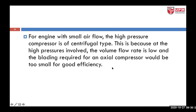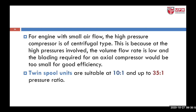For engines with small airflow, you have a small air intake. The high pressure compressor is of centrifugal type, because at the high pressures involved, the volume flow rate is low and the blading required for an axial compressor would be too small for good efficiency. Twin spool configurations are suitable for pressure ratios in the range of 10 to 1 up to 35 to 1.